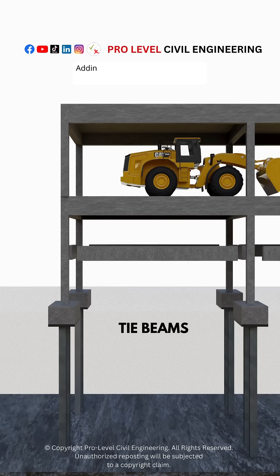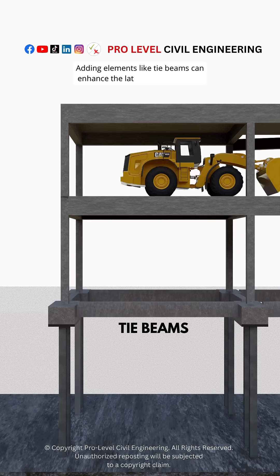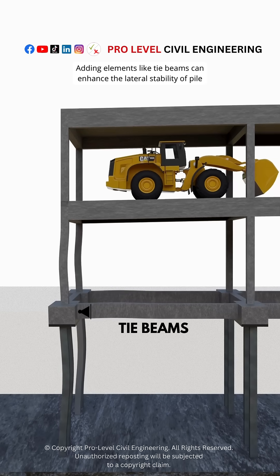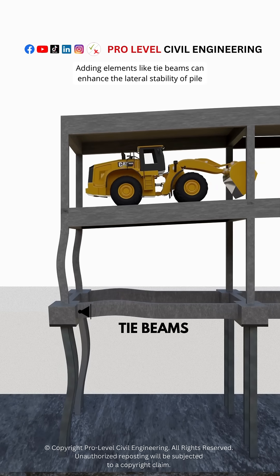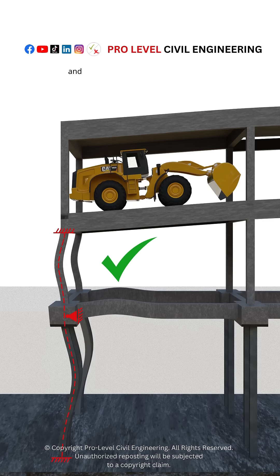Adding elements like tie beams can enhance the lateral stability of pile and column systems by increasing stiffness, reducing effective length, and distributing loads.